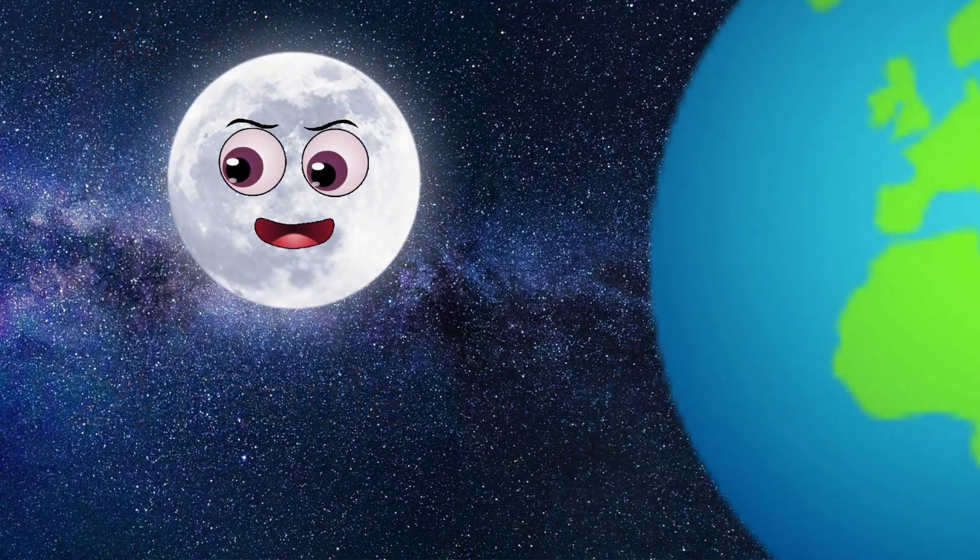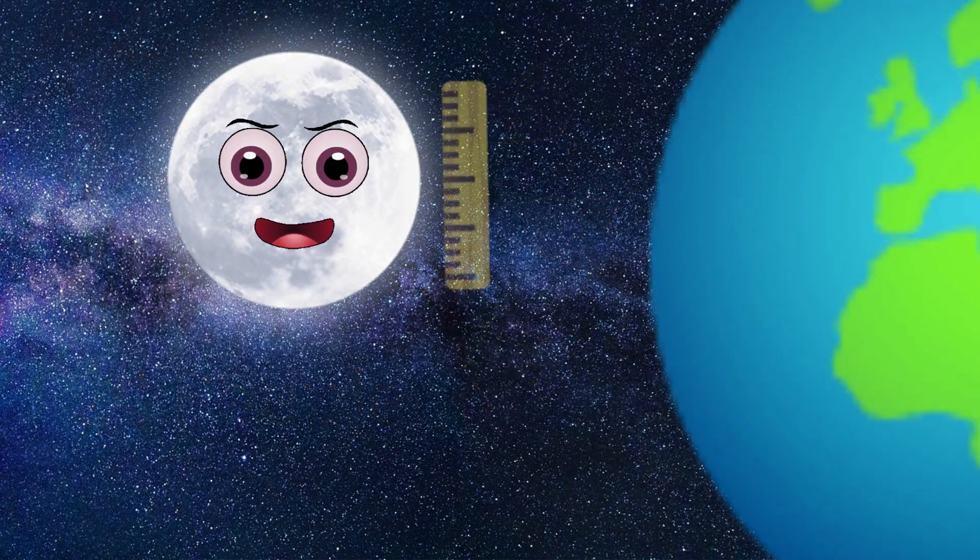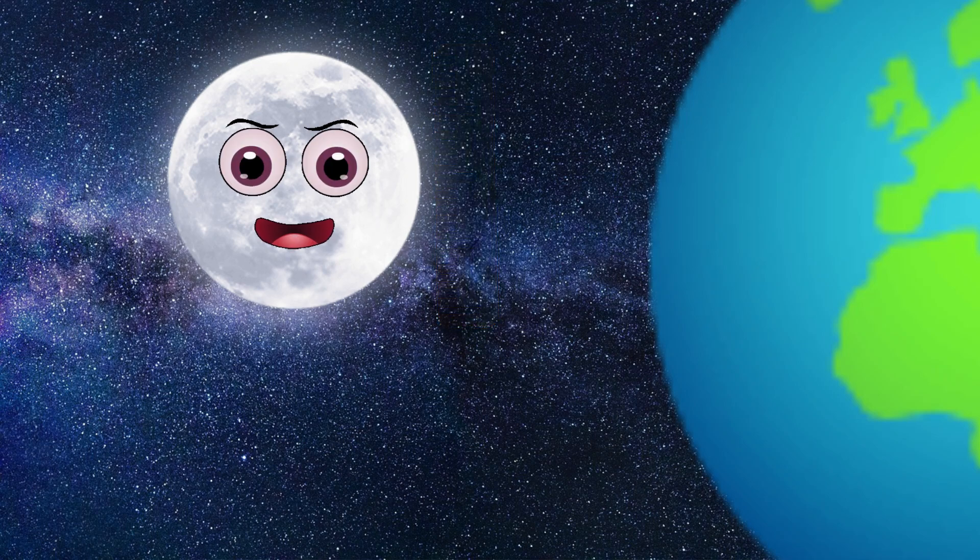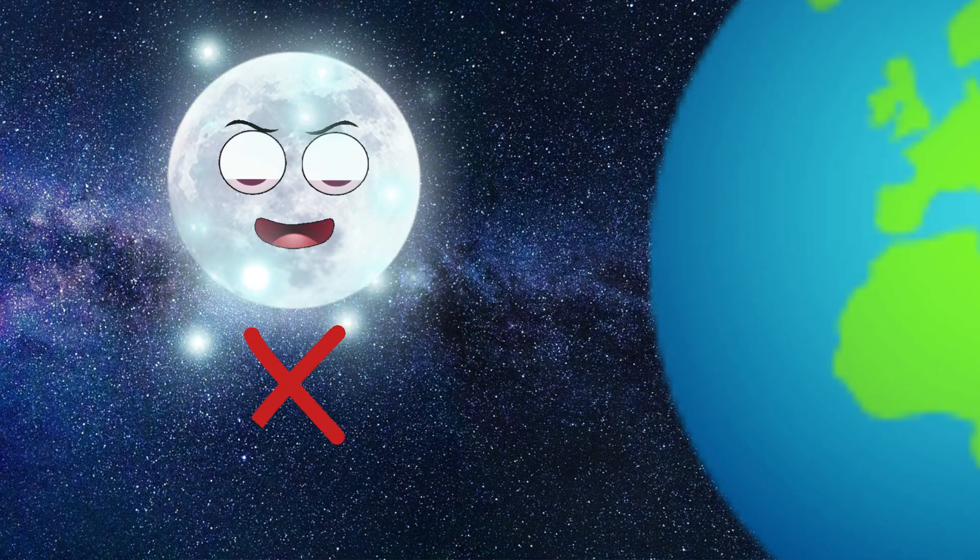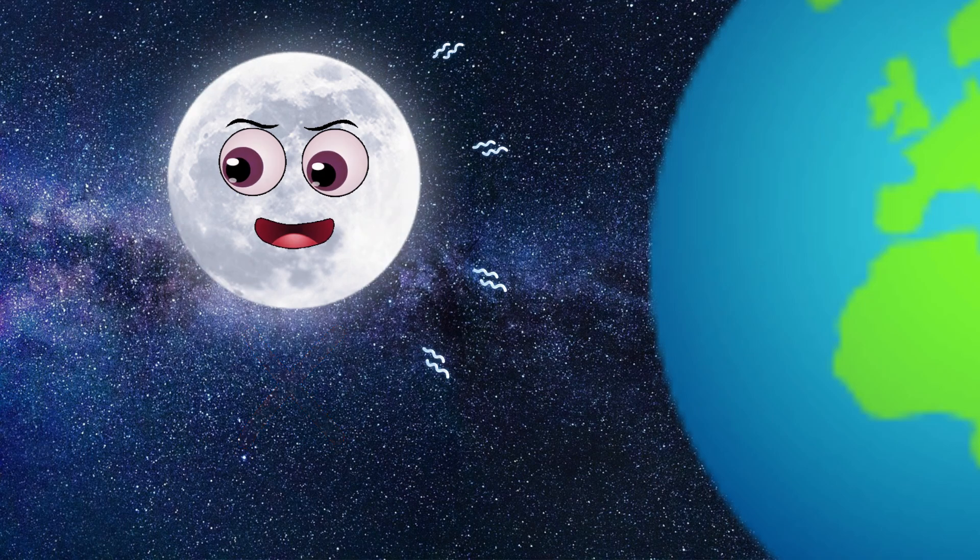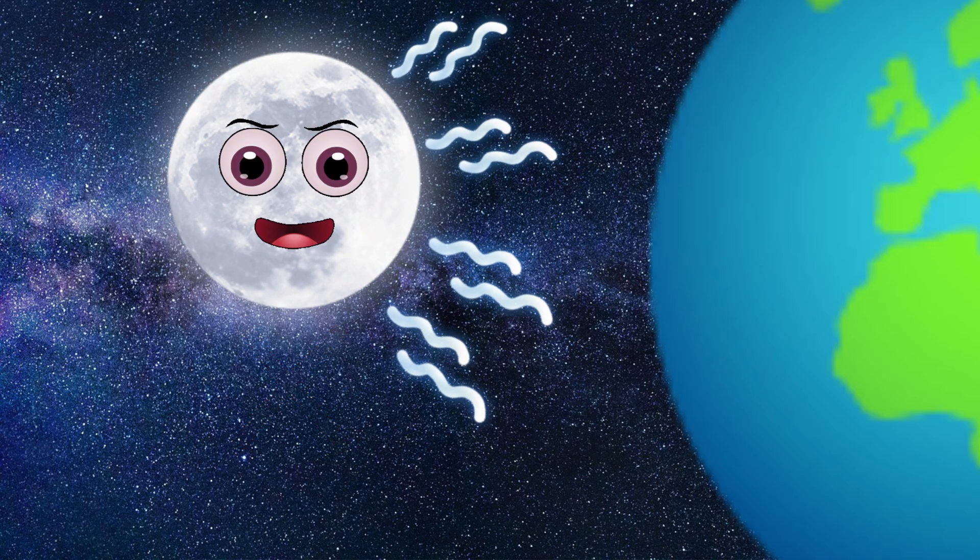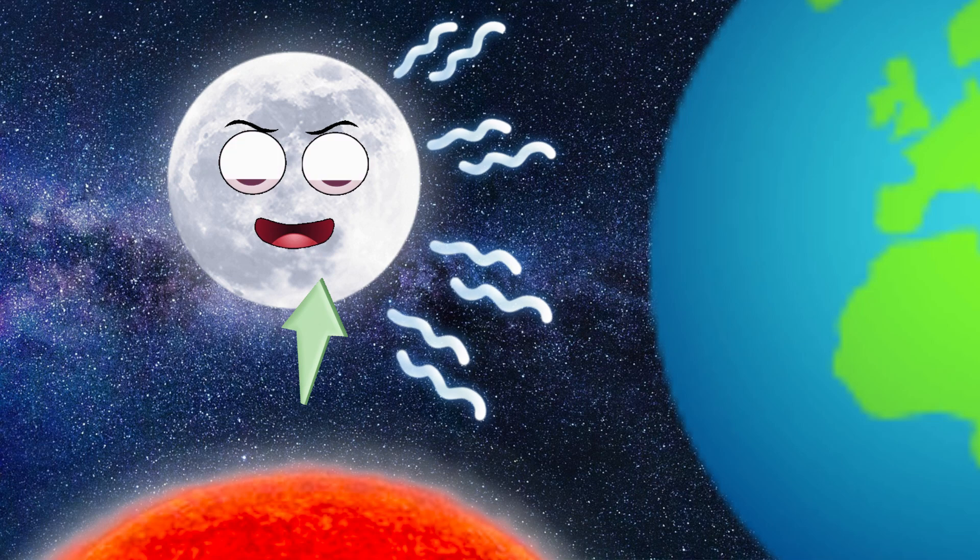Earth's moon is the brightest and largest object in our night sky. However, the moon doesn't emit light itself. The moonlight we see is actually the sun's light reflected off the moon's surface.